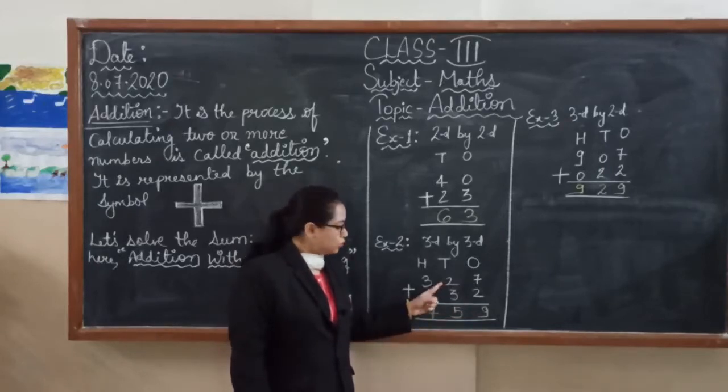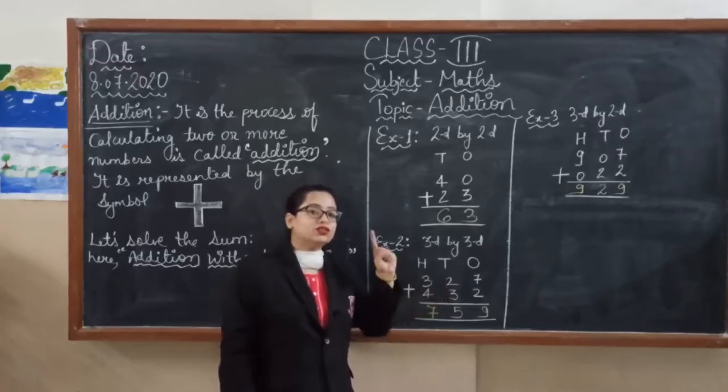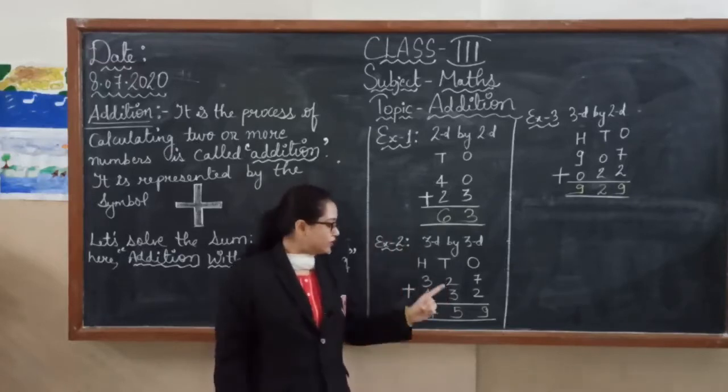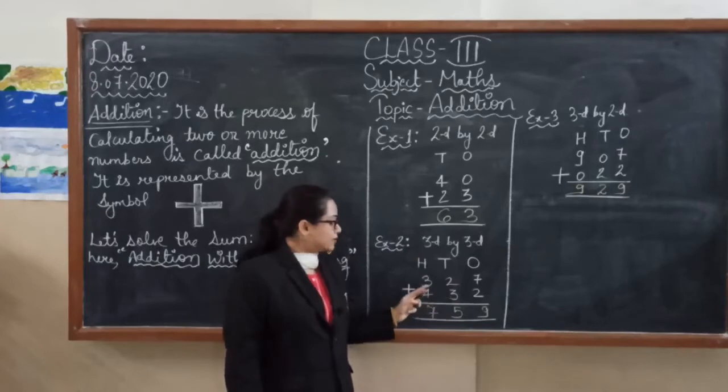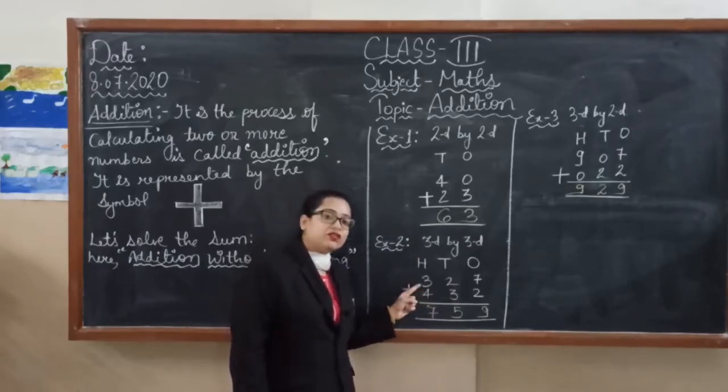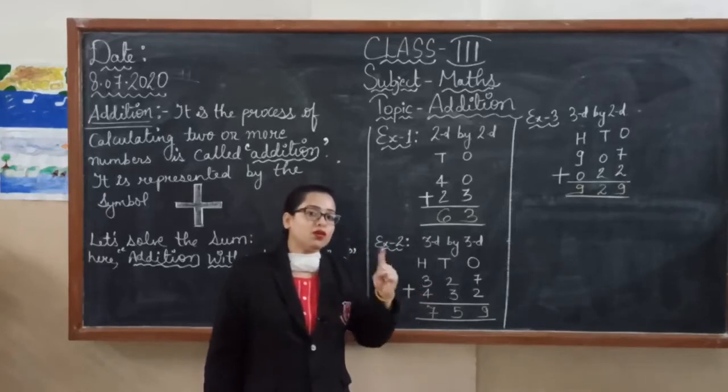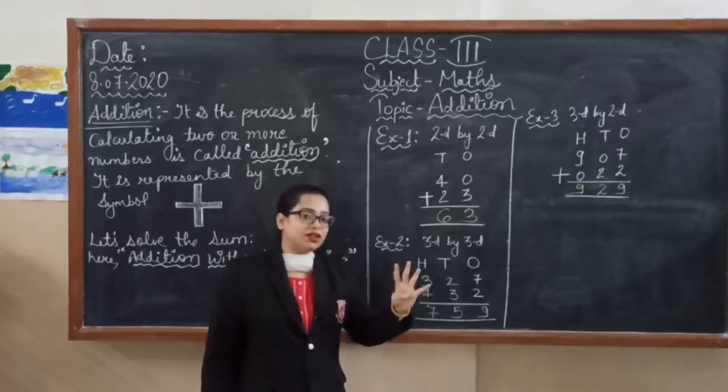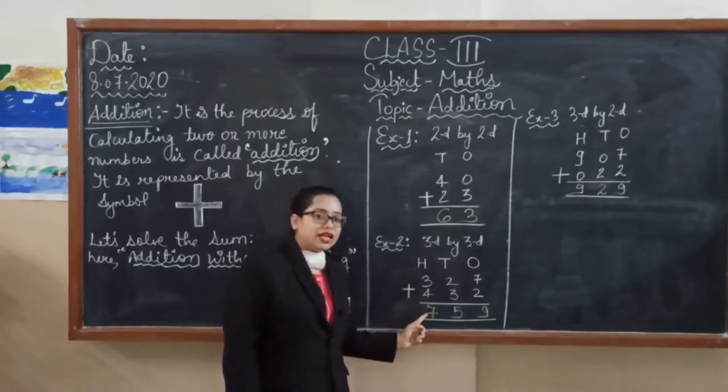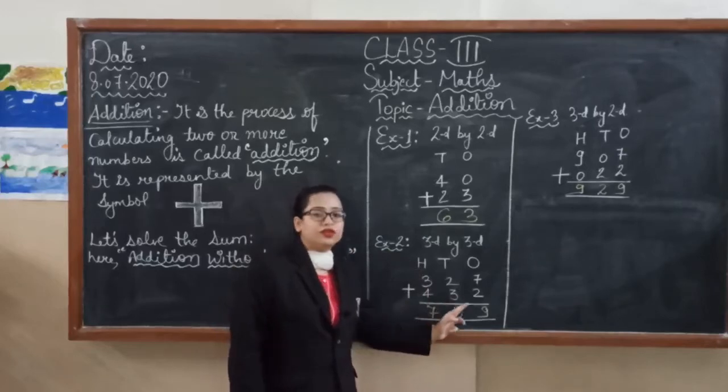On the ten's place, two and three are given. After two we will count three more: three, four, five. So here we will write five. And next number is three and four. After three we will count four more: four, five, six, seven. So our final answer is seven hundred fifty-nine.